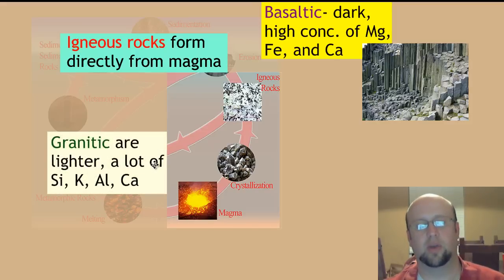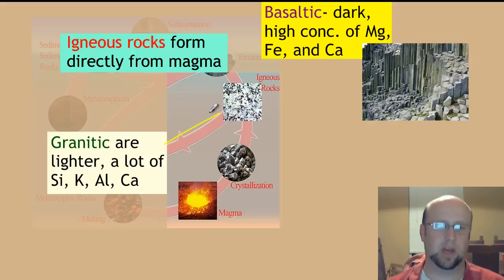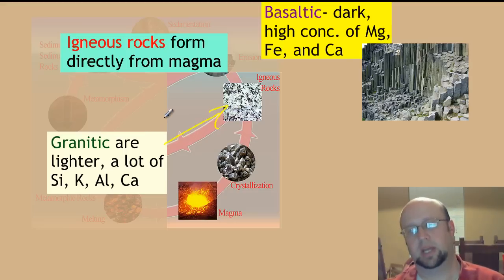There are granitic rocks or granite-type rocks, like this sample of granite here. They tend to be a lot lighter in color. They've got a bunch of different minerals in them, some micas and feldspar and quartz, typically. Usually they've got a lot of silica, silicon, potassium, aluminum, and calcium. They're mostly made up of quartz, which is mostly silicate. Those are our two main types of igneous rocks.